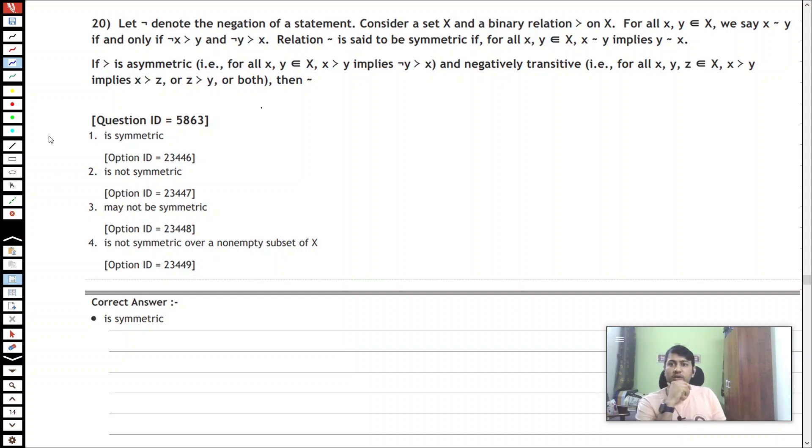Okay, now in question number 20 we have similar definitions as previous ones. Then we have been defined what is, what does it mean for indifference to be symmetric, and we know that when normal things hold then my indifference is going to be symmetric.